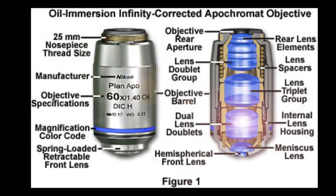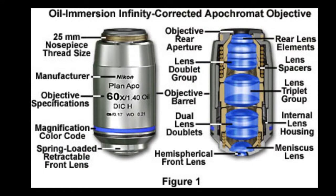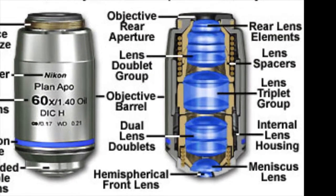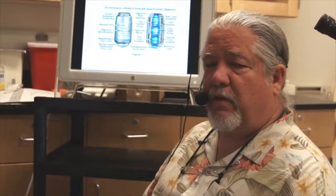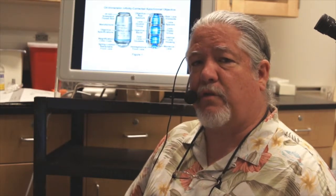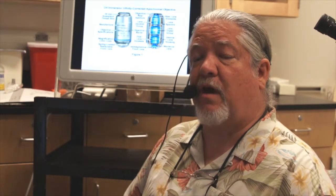You'll see on this screen a 60x objective and a cutaway. The first thing I want you to notice is all of the lenses inside the objective. These individual lenses are used to correct for several different aberrations that are caused when we produce glass for magnification purposes. We're going to talk about those aberrations in a few minutes, but first let's talk about the information printed on the barrel of the objective itself.